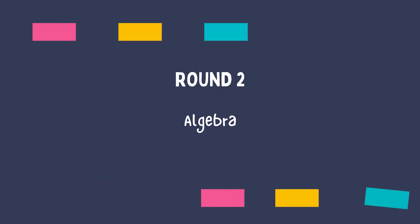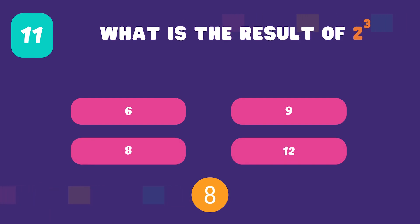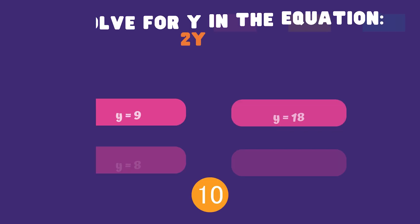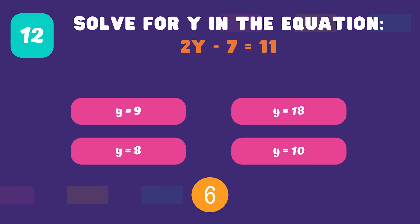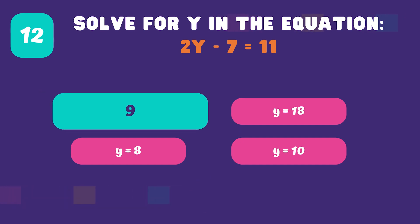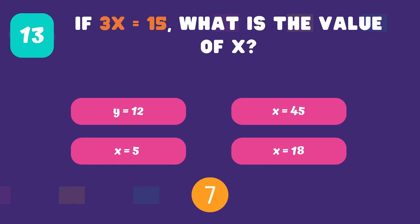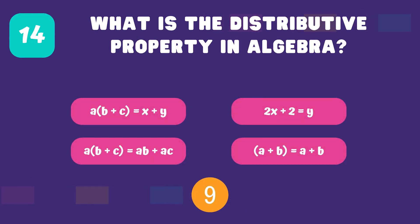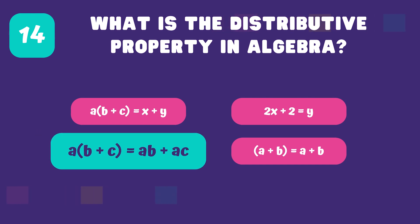Let's dive into the next round. We're now starting with questions about algebra. 2 to the power of 3 is 8. Y equals 9. X equals 5. A times the sum of B and C equals AB plus AC.